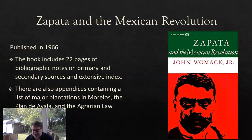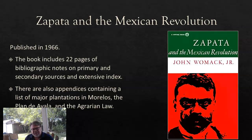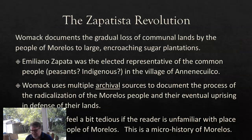Zapata and the Mexican Revolution by John Womack Jr., published in 1966 — if you look at the back of the book, which people tend to do in a PhD program, you'll find 22 pages of bibliographic notes on primary and secondary sources and an extensive index. There are also appendices containing a list of major plantations in Morelos, the Plan de Ayutla, and the agrarian law.